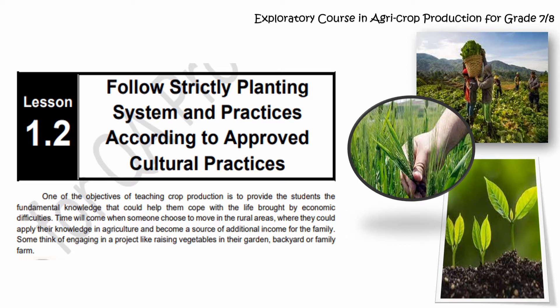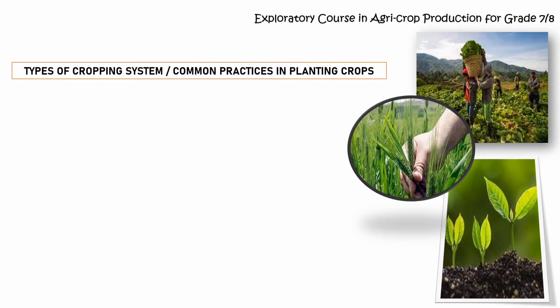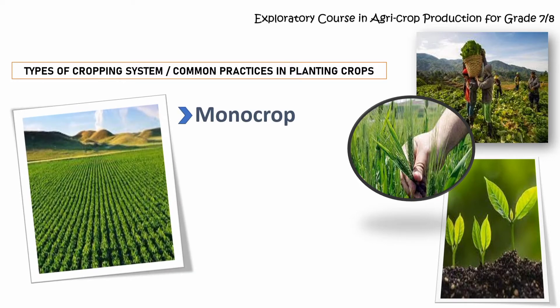Some think of engaging in a project like raising vegetables in their garden, backyard, or family farm. Here are the different types of cropping system or common practices in planting crops. First, monocrop.